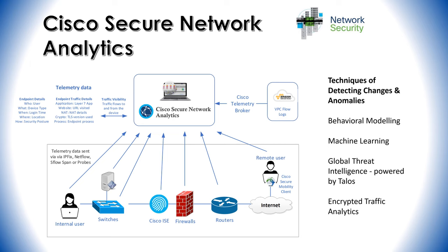What techniques do these analytics platforms use to detect and feed back information about the network? There are four main techniques for detecting changes and anomalies. The first is behavioral modeling: once analytics has data about all the network connections, it applies behavioral modeling, which analyzes every activity within the network to detect changes and find anything abnormal. It uses IP metadata, system logs, security events, configuration changes, and information from vulnerability scanners — then performs behavioral modeling across all of this data, looking at ports, protocols, device connections, and so on to detect abnormal behavior.